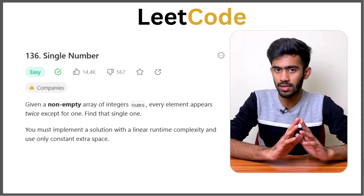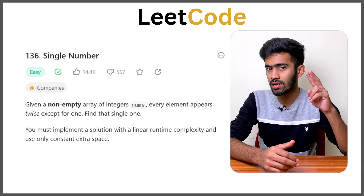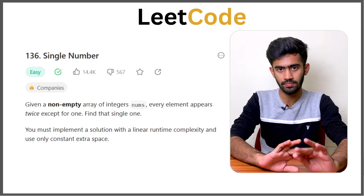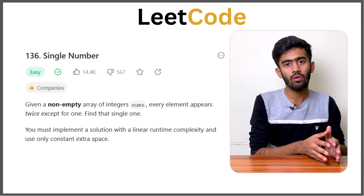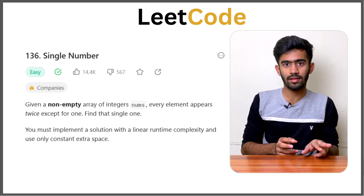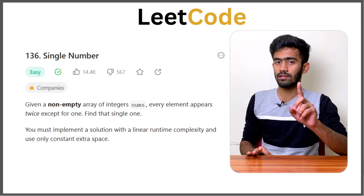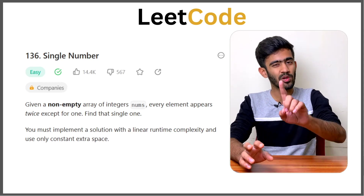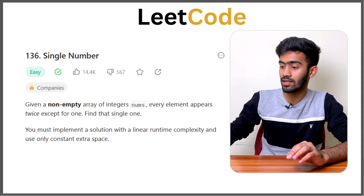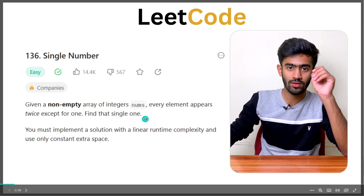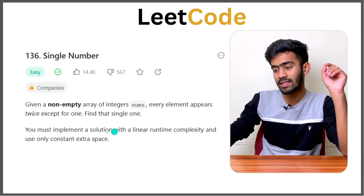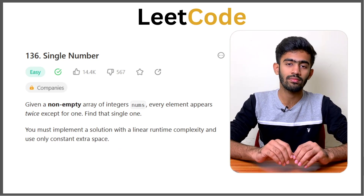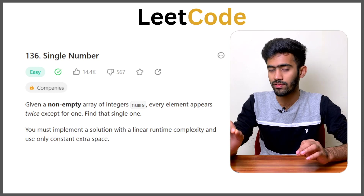We have an array of numbers. All numbers appear two times, and only one number appears once — only one replica, one copy. For example, 1, 1, 2, 2, 3 — only one number appears once. We are going to solve this in O(n) time and with constant extra space, so we cannot use a hash map or extra array.